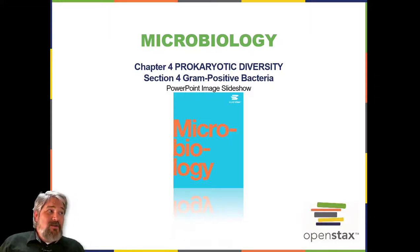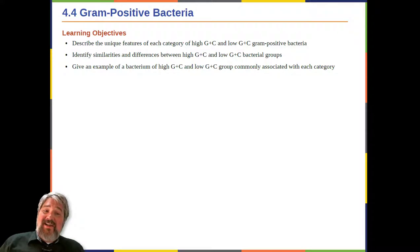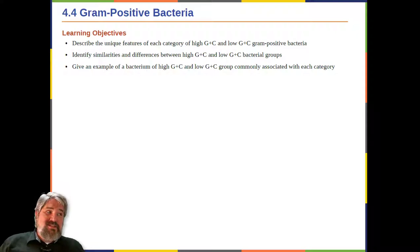Welcome to Chapter 4, Section 4: Gram-positive Bacteria. Learning objectives: Describe the unique features of each category of high-GC and low-GC gram-positive bacteria. Identify similarities and differences between high-GC and low-GC bacterial groups. Give an example of a bacterium of a high-GC and low-GC group commonly associated with each category.